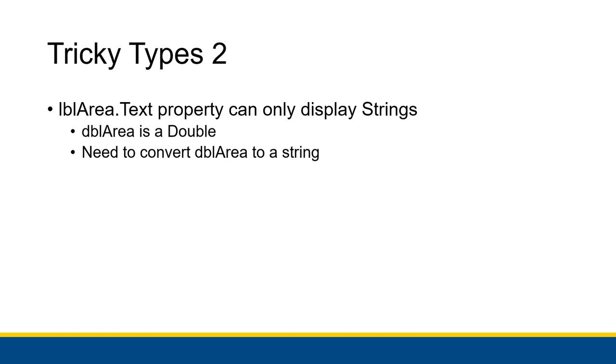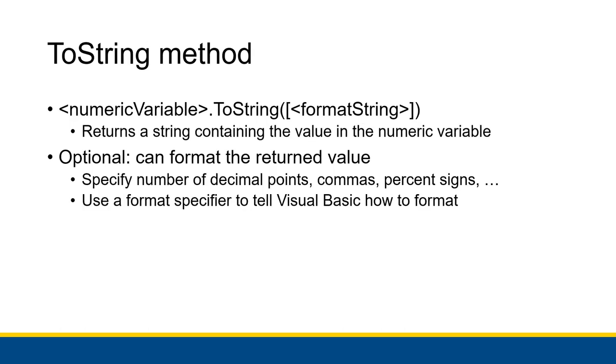For our circle area application, we have to convert our double area, which contains the area of the circle, into a string so that we can display it for the user. We can use the toString method of any double, integer, and decimal, among probably other classes as well.